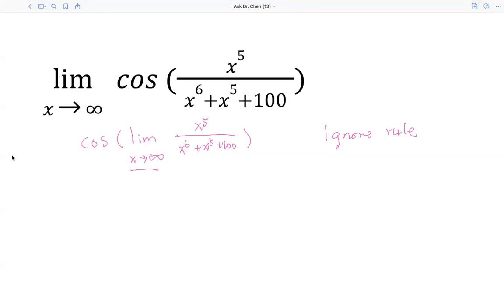The ignore rule is saying just take the leading term in the numerator and take the leading term in the denominator, and forget about, ignore the lower terms. Because at infinity, when x approaches infinity, the leading term dominates. The leading term dominates the growth.